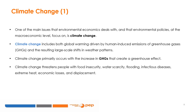Fossil fuel burning — coal, oil, and natural gas — for energy consumption is the main source of these emissions, with additional contributions from agriculture, deforestation, and manufacturing. Climate change threatens people with food insecurity, water scarcity, flooding, infectious diseases, extreme heat, economic losses, and displacement.